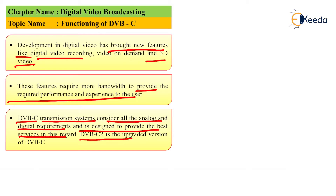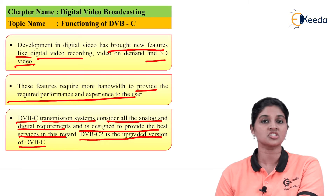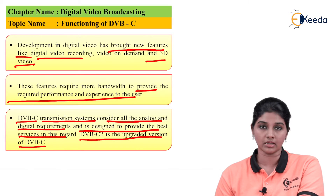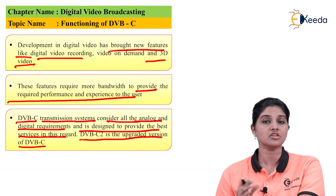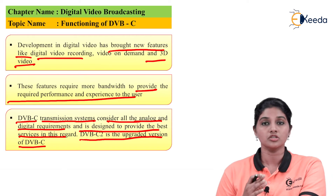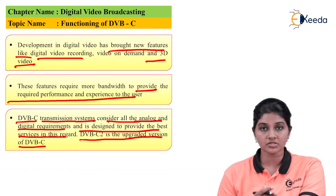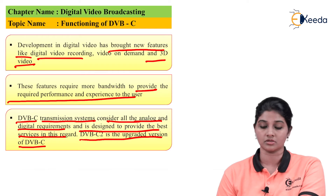DVB-C2 is an upgraded version of DVB-C, similar to how DVB-T2 is an extension of DVB-T providing additional services and features. DVB-C2, the second generation cable system, is used as an extension of DVB-C which includes additional services and features, and its introduction affects both quality and cost.